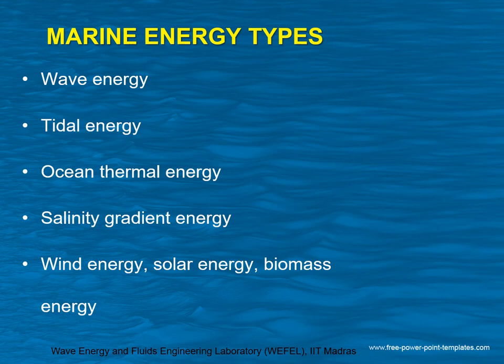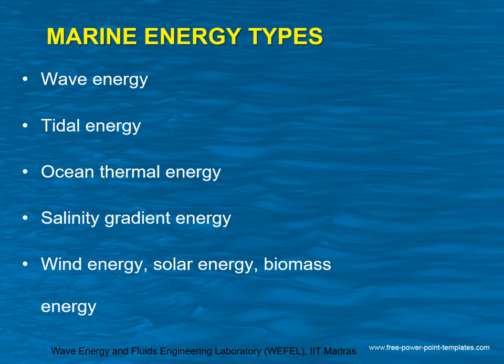The up and down motion of the waves is used to produce electricity. Tidal energy is a form of hydro power that converts the energy from tides into a useful form of energy. Ocean thermal energy conversion uses the thermal gradient between the ocean's cool deep water and warmer surface water to produce electricity. Salinity gradient power is the energy created from the difference in salt concentration between two fluids — the difference between sea water and fresh water is used to generate electricity.